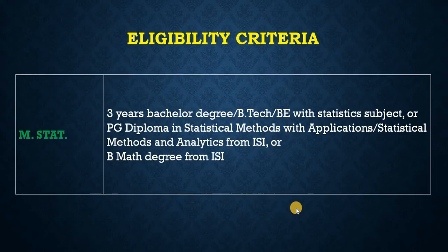When it comes to eligibility criteria, you need to have a three-year bachelor's degree or B.Tech or Bachelor of Engineering degree with statistics as a subject. You don't need to have it as an honors subject; you can have it as a general or subsidiary or ancillary subject as well. Or you have a postgraduate diploma in statistical methods with application and statistical methods and analytics from ISI, or B.Math degree from ISI. These all make you eligible for ISI M.Stat, obviously B.Math or B.Stat both.